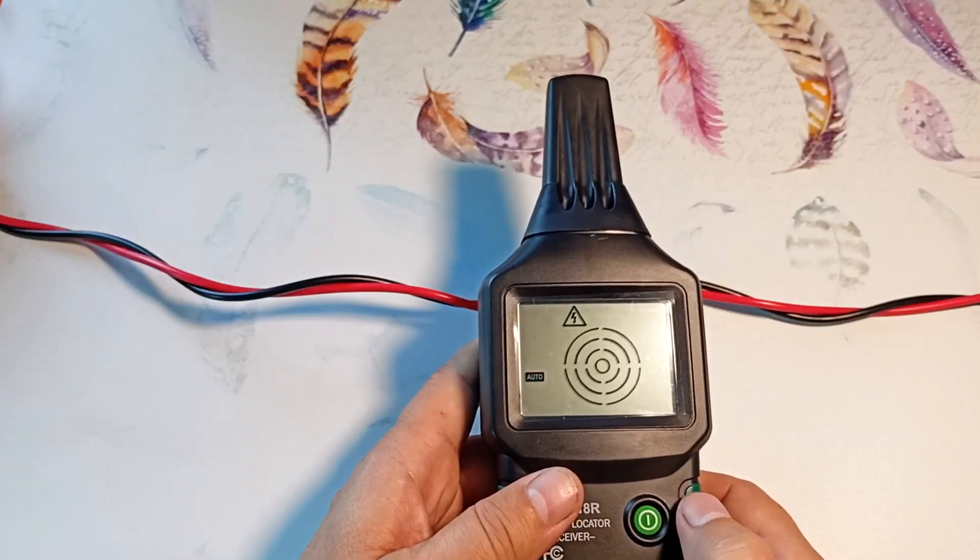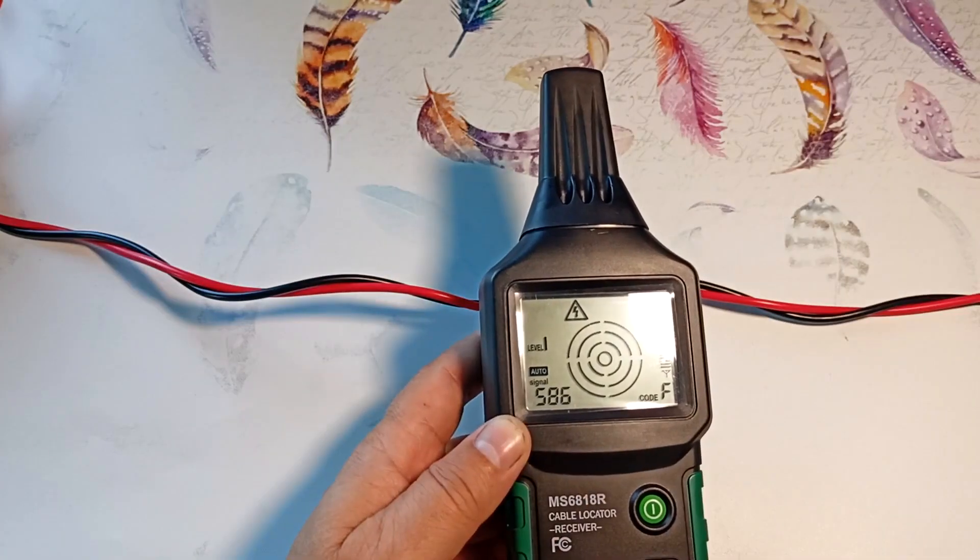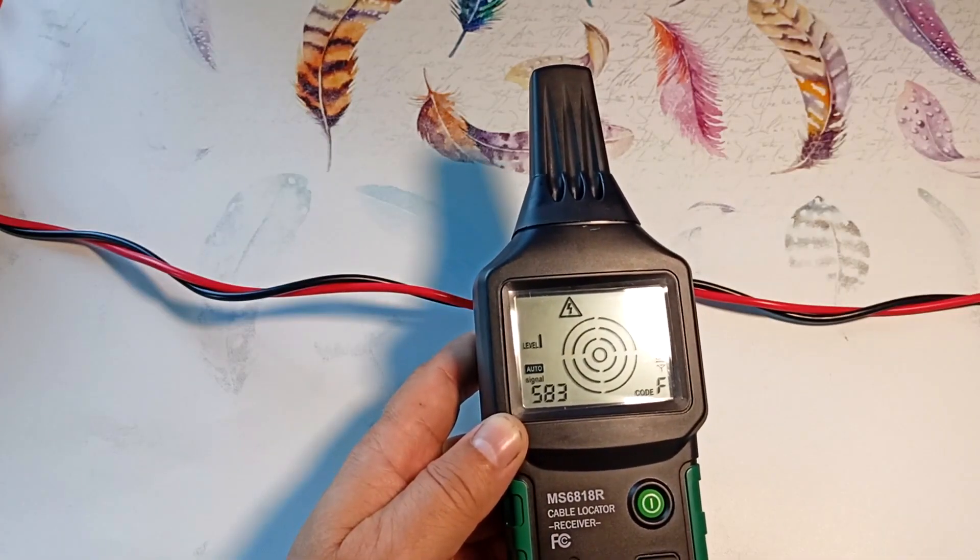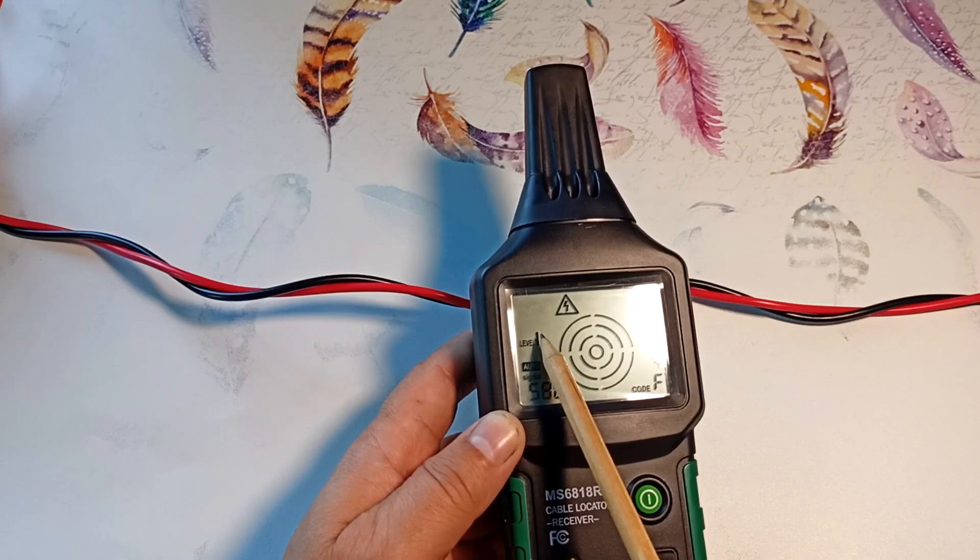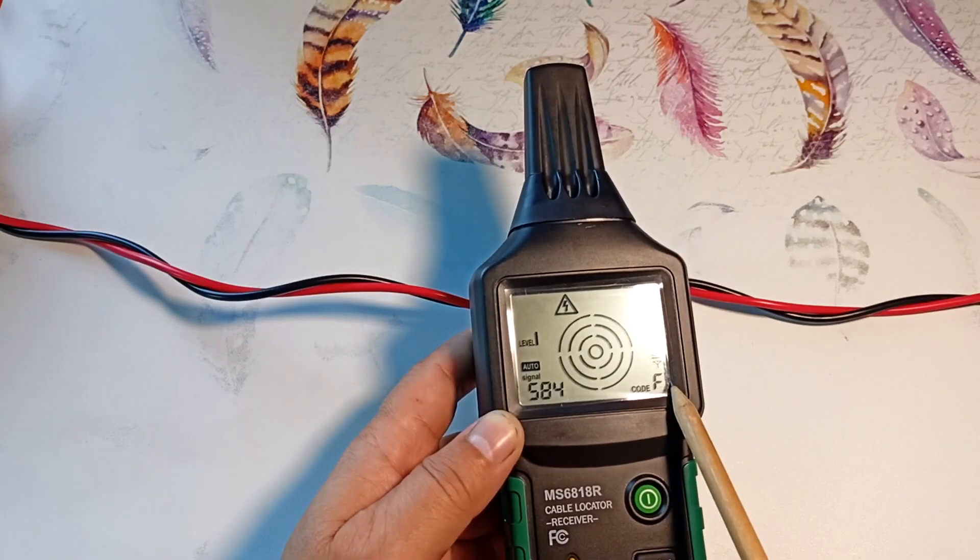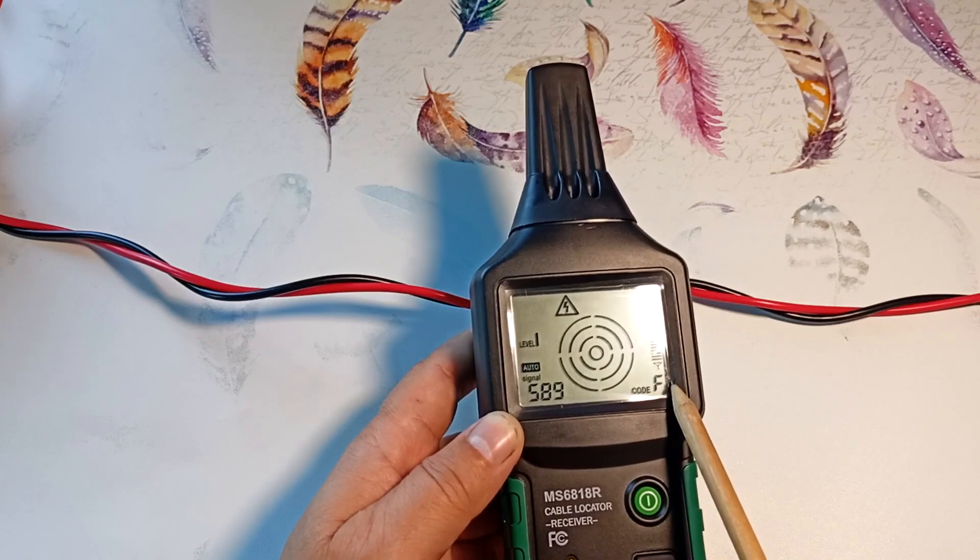I turn on the receiver. Now it works in automatic mode. Here it shows the signal level emitted by the generator. Shows the signal encoding here. As we see F.